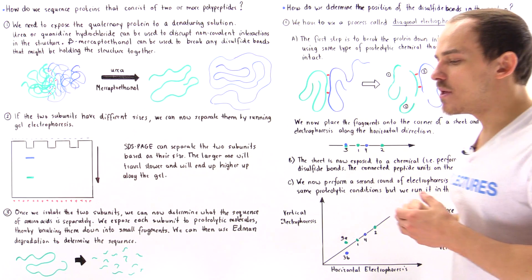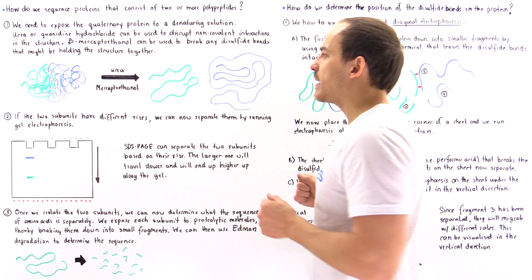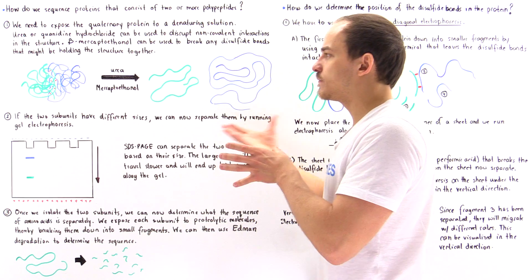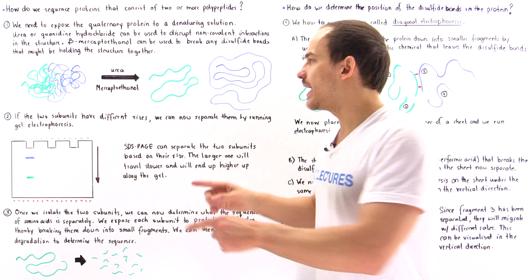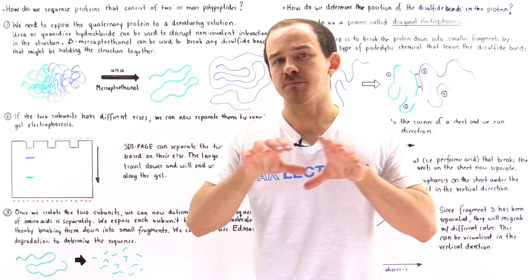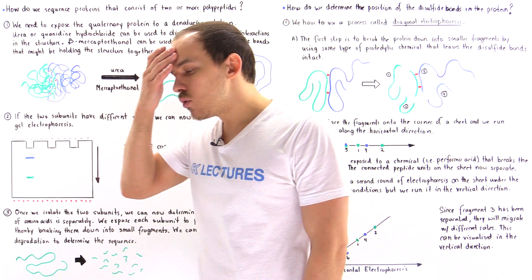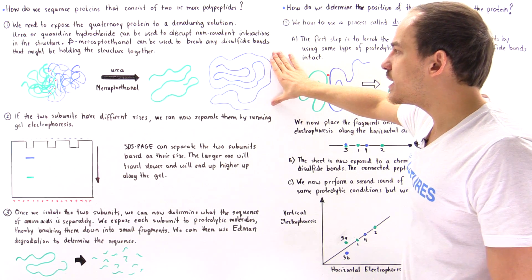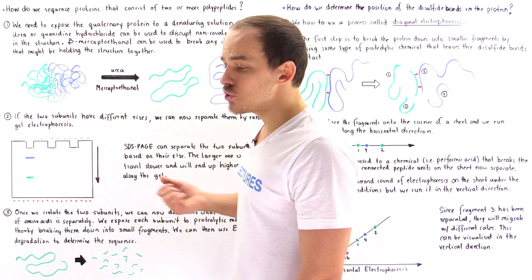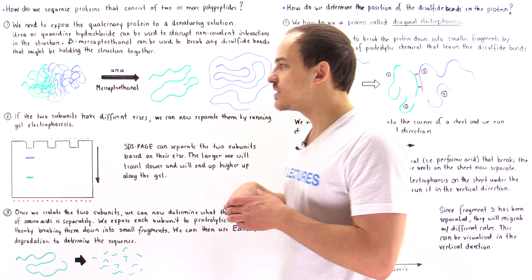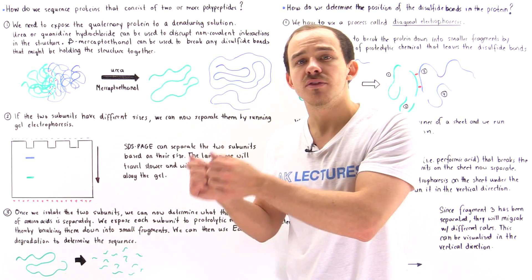The next step is step number two. Once we separate the polypeptide chains and have the mixture of these two different types of polypeptide chains, the next question is how do we purify our mixture and isolate these two polypeptide chains into different compartments, into different beakers. We have to use some type of purification method. Because in this case the size of one is greater than the size of the other, we can use gel electrophoresis — SDS-PAGE, also known as SDS polyacrylamide gel electrophoresis. This setup allows us to separate the two polypeptide chains based on their size and mass.